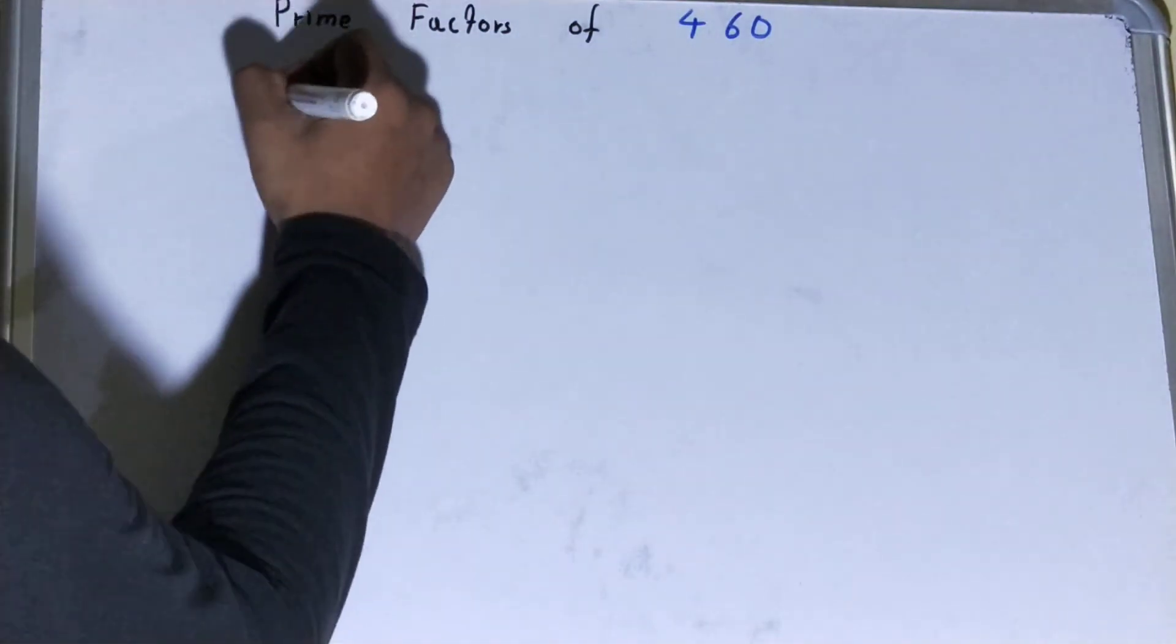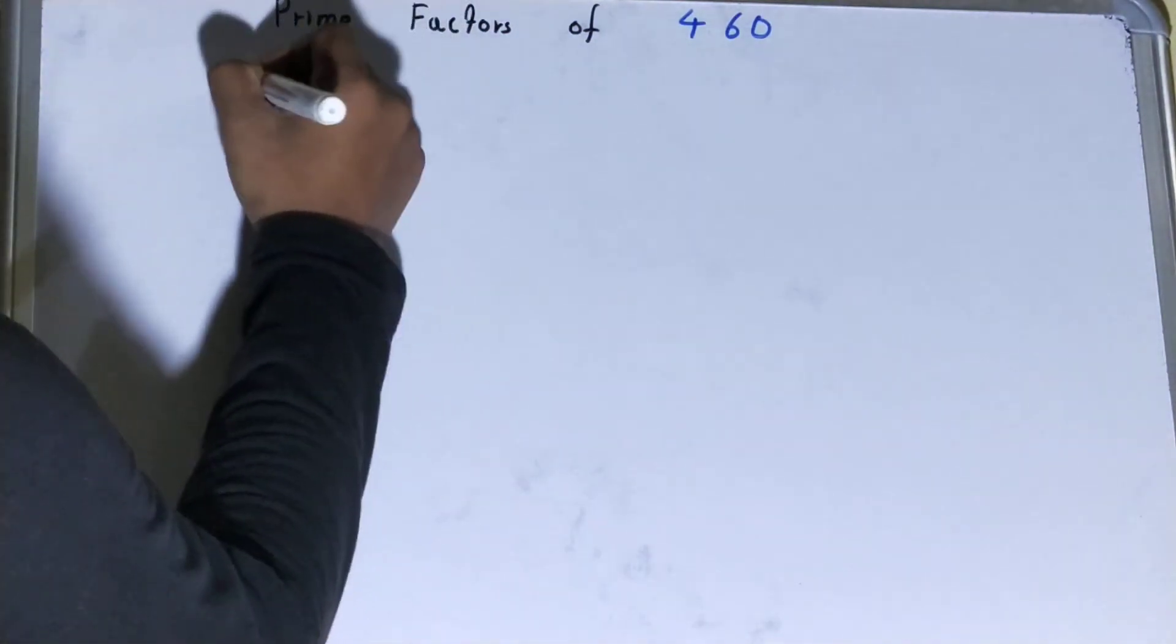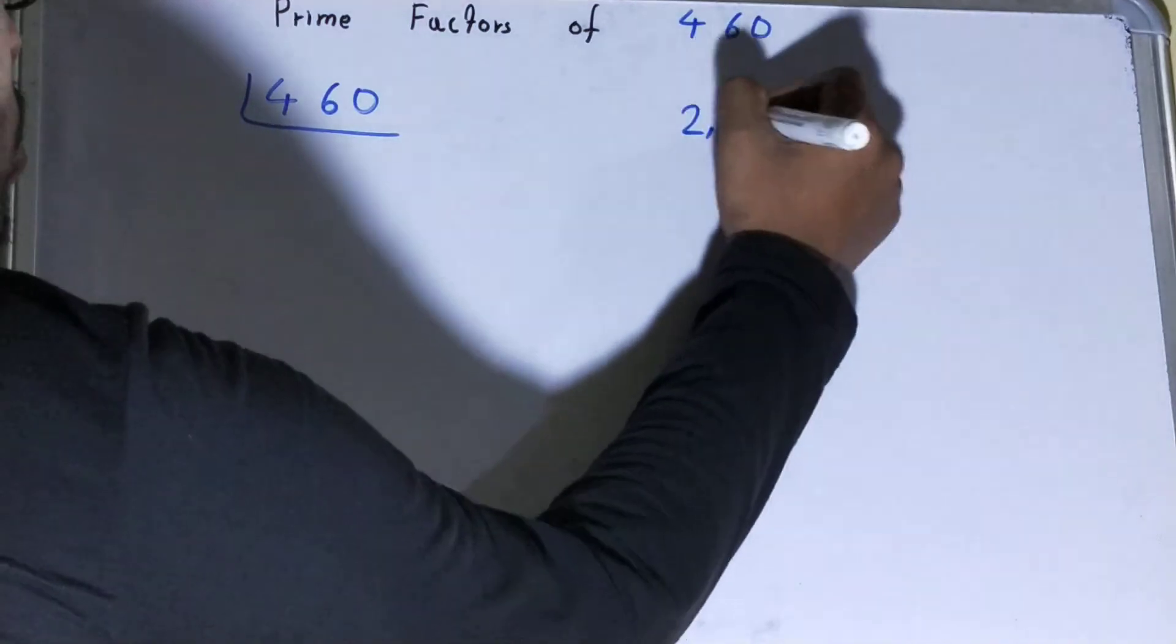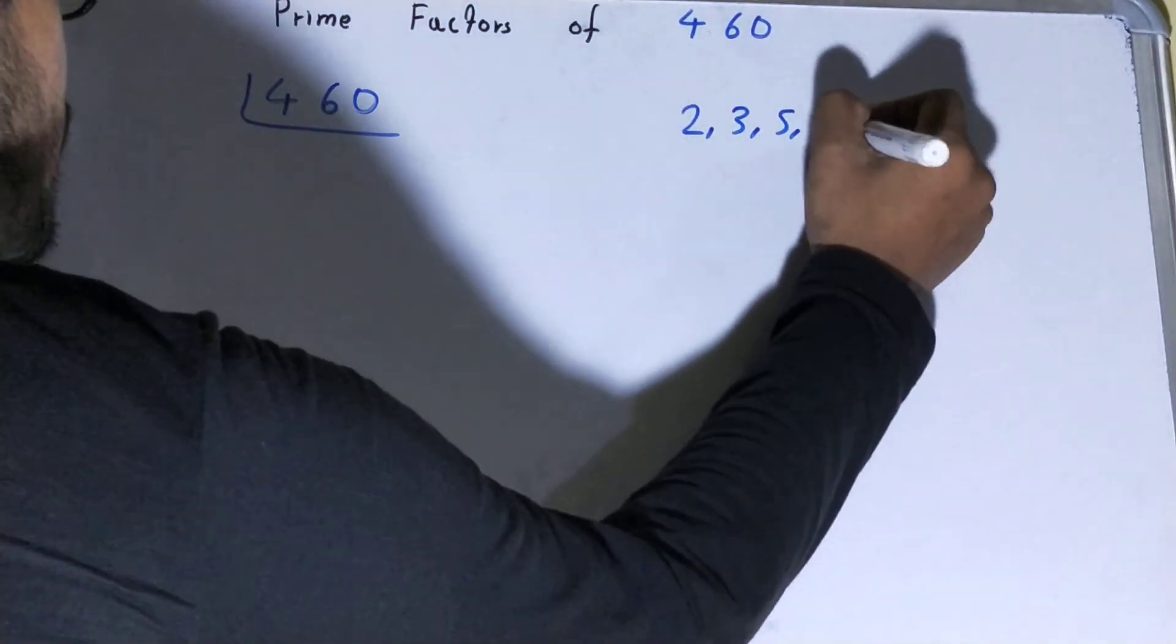So to find out prime factors of 460, you need to write the number like this. And before solving this any further, you must have an idea about what prime numbers are. So your prime numbers are numbers that are divisible by 1 and themselves only like 2, 3, 5, 7 and so on.